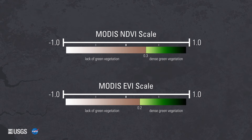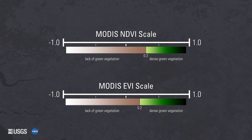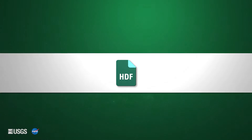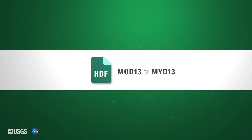MODIS vegetation indices are measured between negative 1 and 1. NDVI values less than 0.3 and EVI values less than 0.2 generally indicate a lack of green vegetation or barren areas. Higher vegetation indices values indicate areas of dense green vegetation, such as fully developed forest or crop canopies.